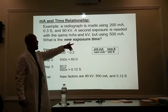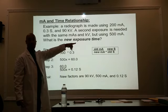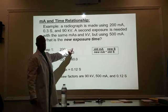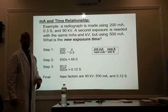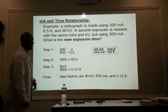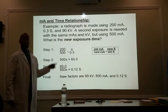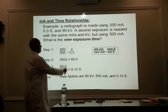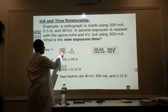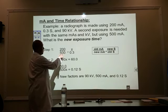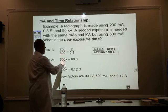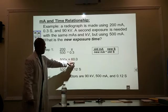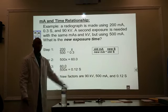Let's plug this in. My old MA is 200. My new MA is 500 because that's what we want. So 0.3 times 200 divided by 500 — this is what I get. 60 divided by 500 will give me 0.12 seconds.